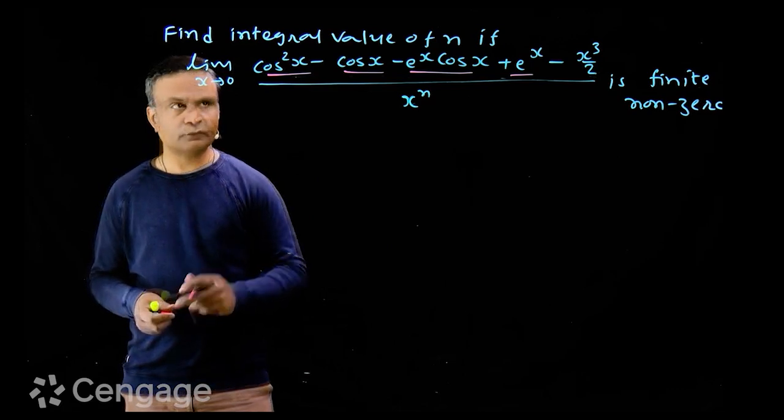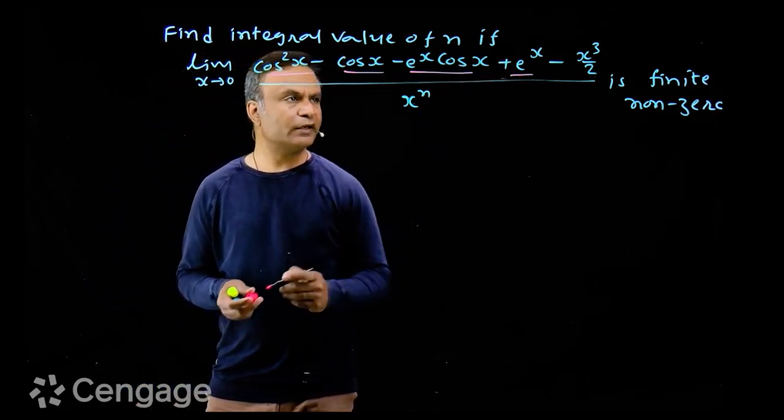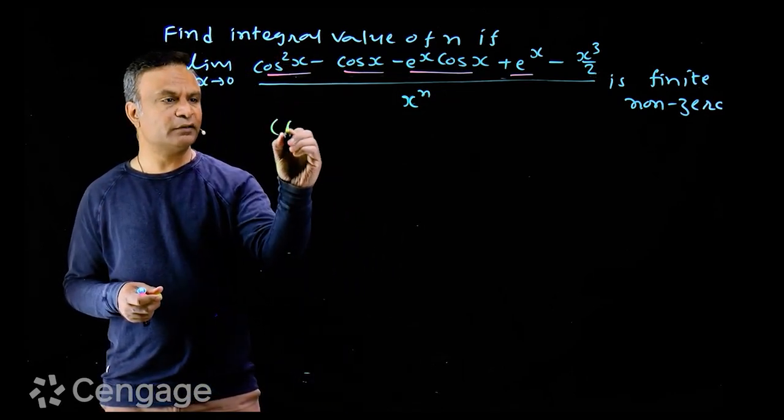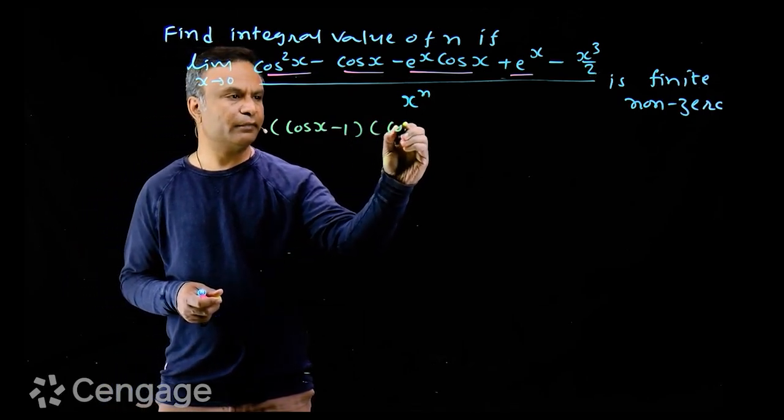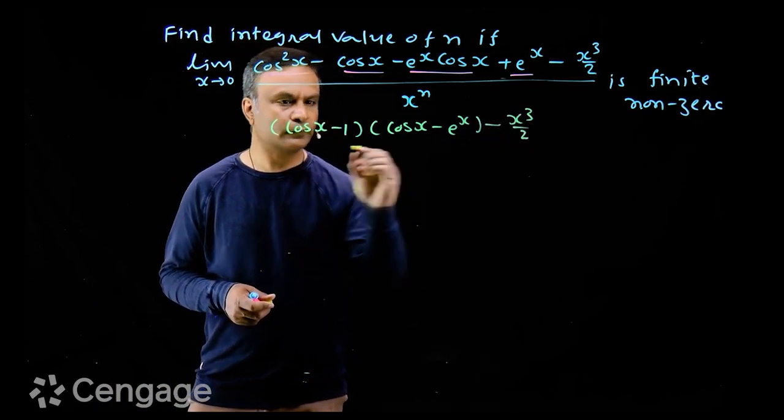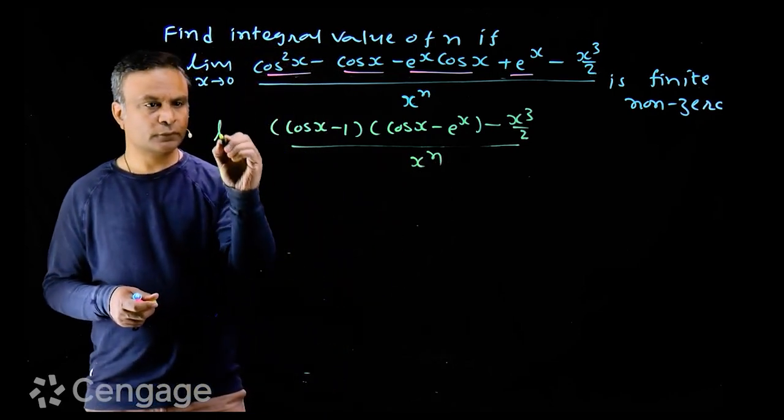We can factorize. From this two terms we can take out cos x, and from this two terms we can take out minus e power x. So we have factors cos x minus 1 multiplied by cos x minus e power x.